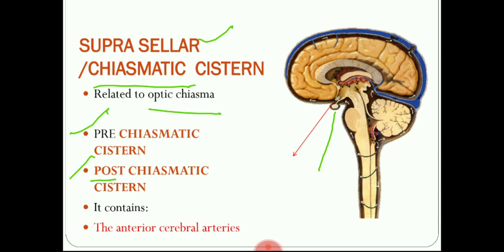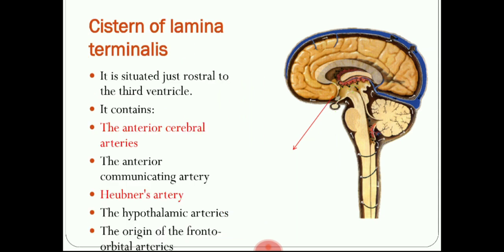The content of the chiasmatic region is the anterior cerebral artery. This chiasmatic cistern is continuous with another important cistern located in front of the cavity of the third ventricle — the cistern of the lamina terminalis. The lamina terminalis extends from the optic chiasma to the anterior commissure, and in front of it is the cistern of the lamina terminalis. Its contents include the anterior cerebral artery, the anterior communicating artery, and some branches such as the Heubner's artery, the hypothalamic artery, and the origin of the fronto-orbital arteries.